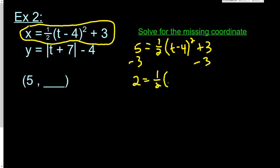And then the other side is one-half t minus 4 squared. And then we're going to multiply by 2 on both sides to cancel out multiplying by one-half. And I get 4 equals, in parentheses, t minus 4 squared.